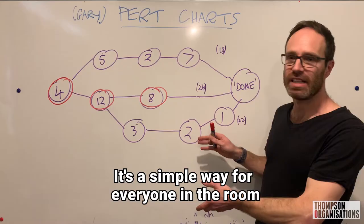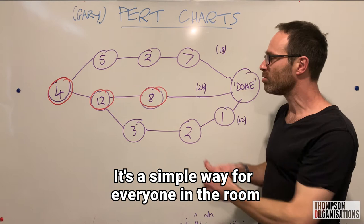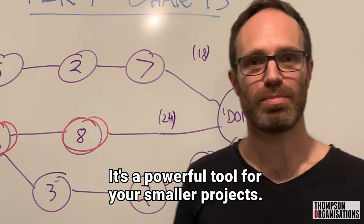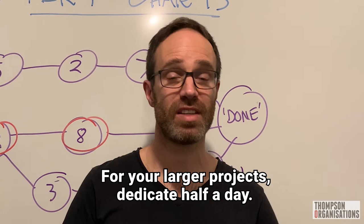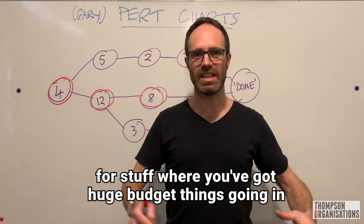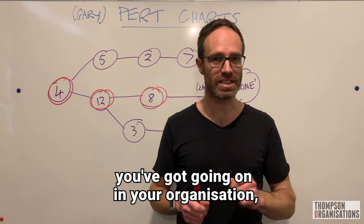It's a simple way for everyone in the room to not only create the project system together, but everyone can visualize the whole project system at once. It's a powerful tool. For your smaller projects, you can knock it up in half an hour. For your medium projects, it can take 90 minutes. For your larger projects, dedicate half a day. You only need the Gantt chart for stuff where you've got huge budget things going in and all this resource balancing, all that sort of stuff. For most of the projects you've got going on in your organization, taking the time to do a quick PERT chart to get things a bit more obvious to everyone, is going to pay big dividends.